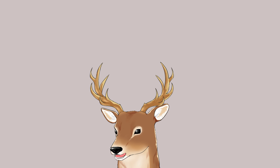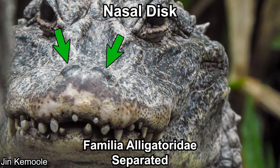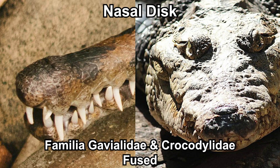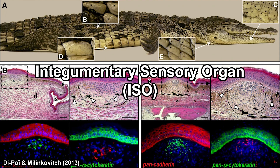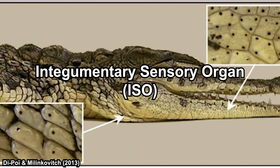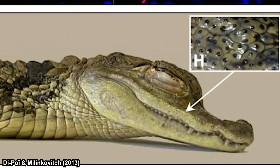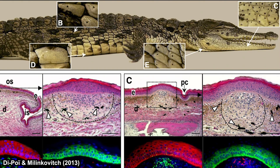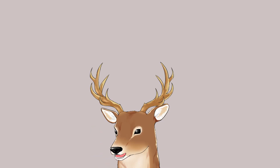Two harder-to-notice characteristics also differentiate them. Alligatoridae have more separated nasal discs, while Gavialidae and Crocodylidae have a fused nasal disc. The other difference is the integumentary sensory organ (ISO) — the dark pigmented skin elevations. Alligatoridae only have ISOs around their snout, whereas Gavialidae and Crocodylidae have ISOs all around their body.